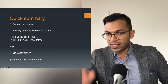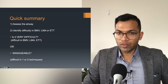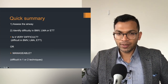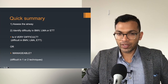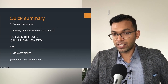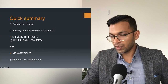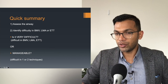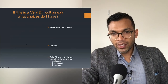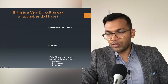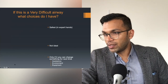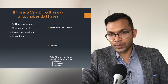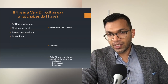Quick summary: you've assessed the airway and identified the difficulty with bag mask, LMA, or ETT. If it's very difficult you do something, and if it's manageable you do something else. If you have a very difficult airway that you think is virtually impossible, you essentially have these options here.